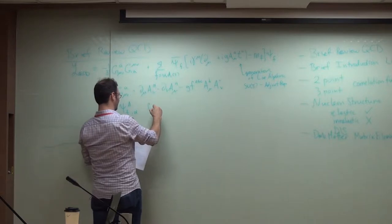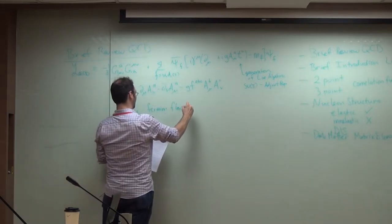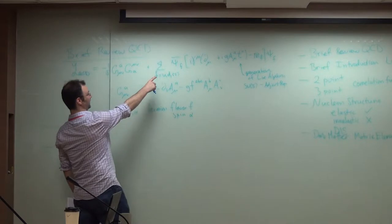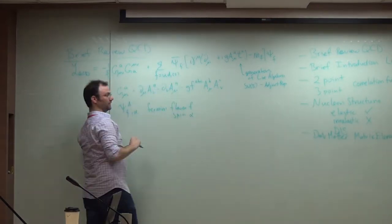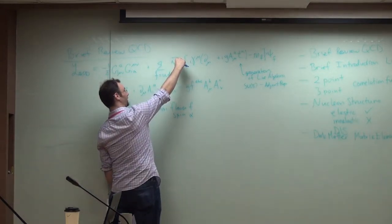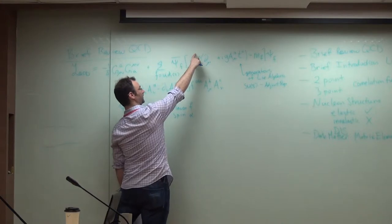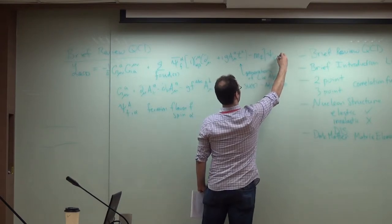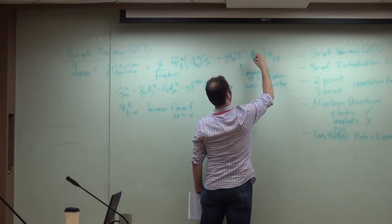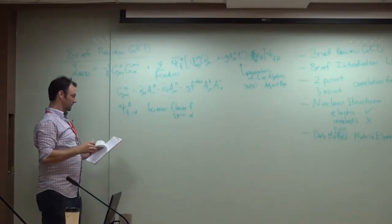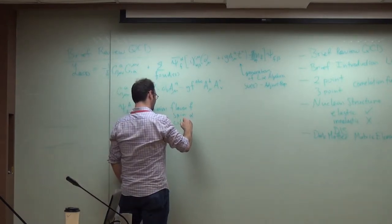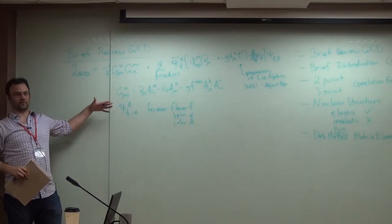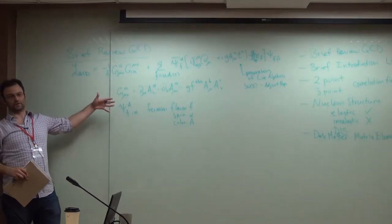We have a fermion with spinor index alpha, which is suppressed in this equation. So these are matrices — I could put an extra spinor index here: alpha, beta. Here I have an identity matrix in alpha, beta. The fermions come in color index A, and as far as we know they are in the fundamental representation — so there are three colors for each quark.